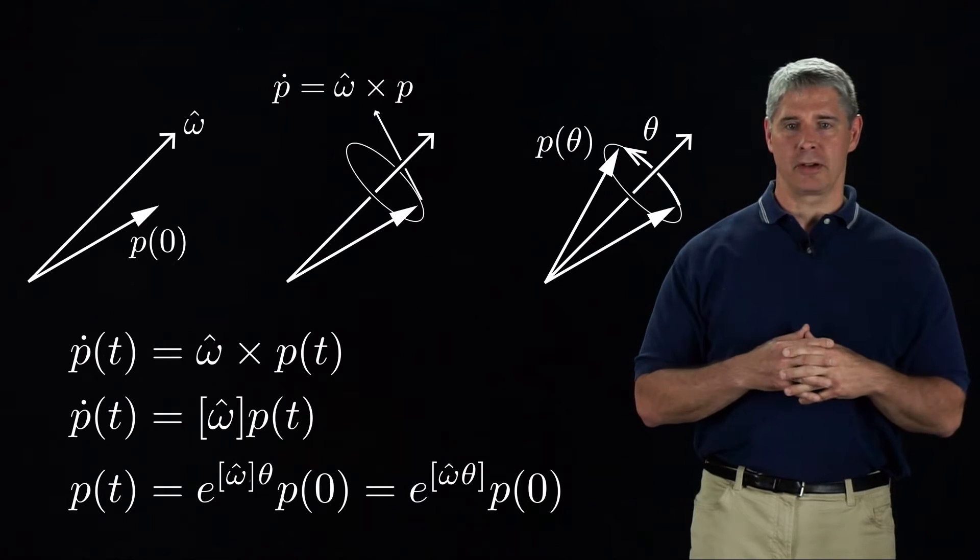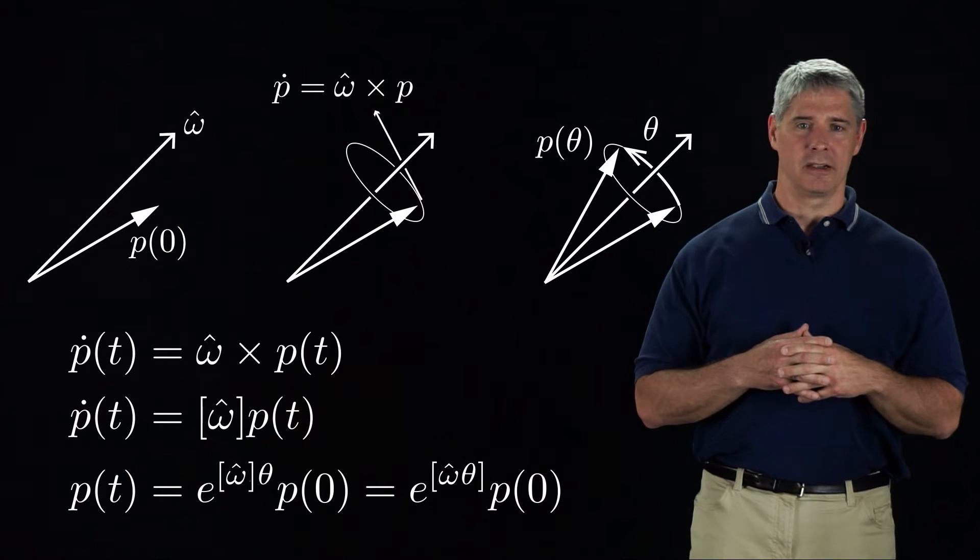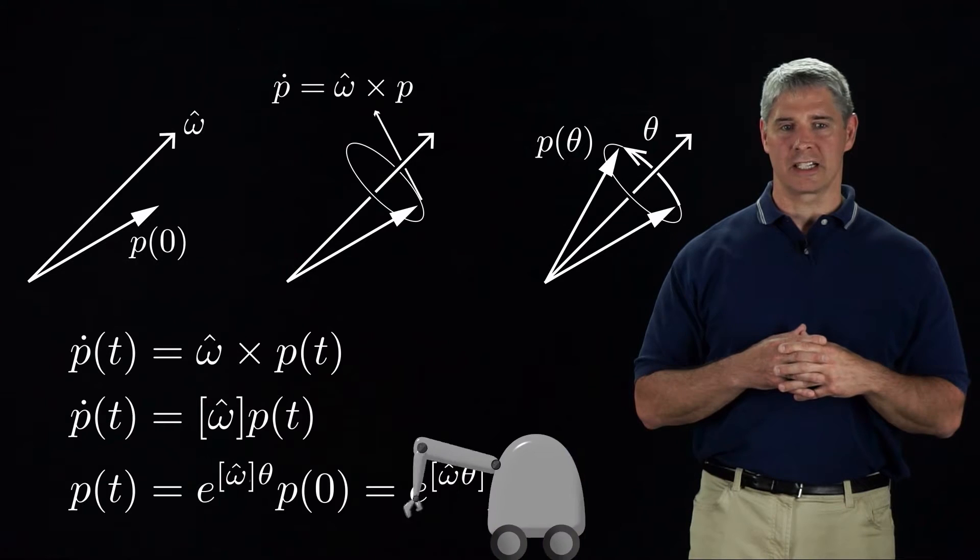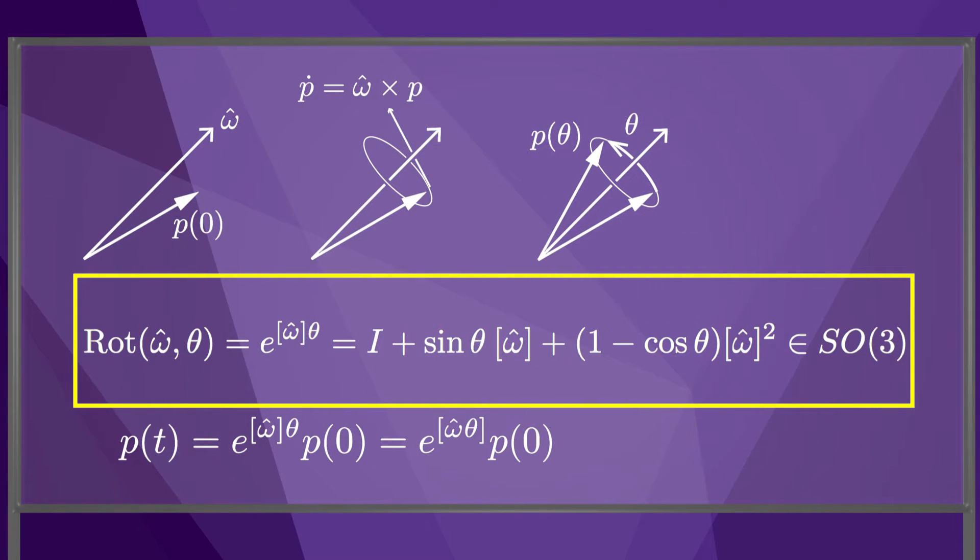In general, a matrix exponential can be calculated using a series expansion, but when the matrix is 3 by 3 and skew symmetric, the series expansion has a simple closed form. The 3 by 3 identity matrix plus sine of theta times bracket omega hat plus 1 minus cosine of theta times bracket omega hat squared. In other words, the matrix exponential takes the skew symmetric representation of the exponential coordinates omega hat theta and calculates the corresponding rotation matrix. This equation is often called Rodriguez's formula.